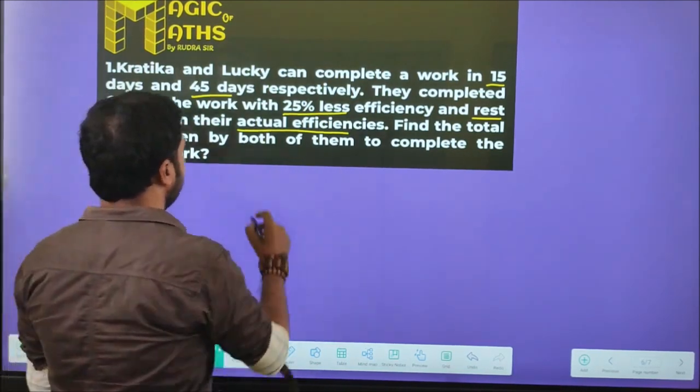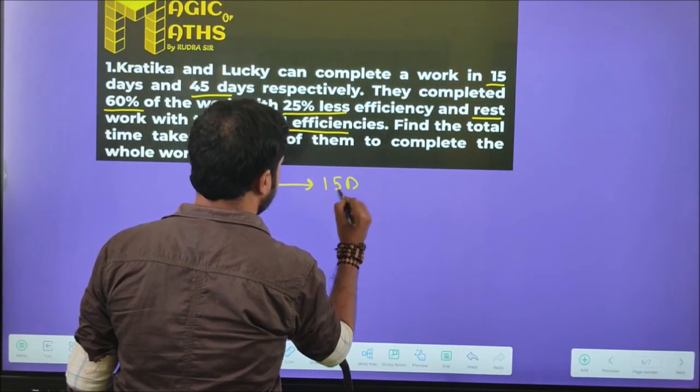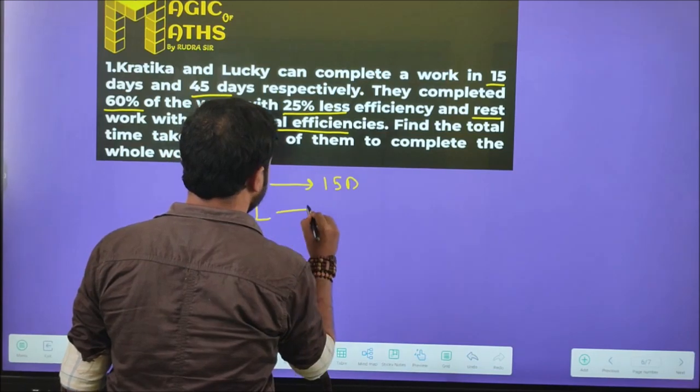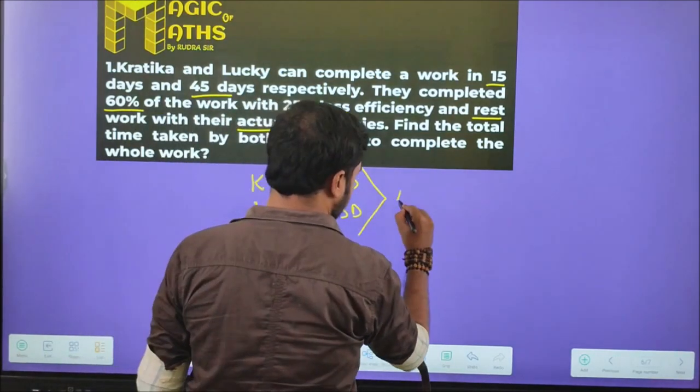First, Kratika takes 15 days and Lucky takes 45 days. So first we take LCM for the total work. Total work is 45.